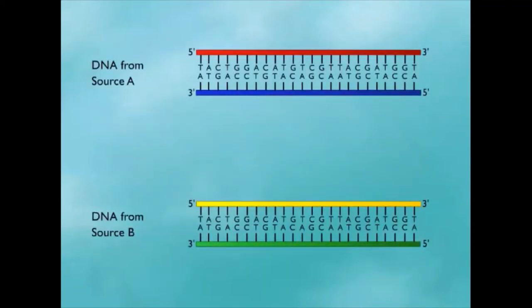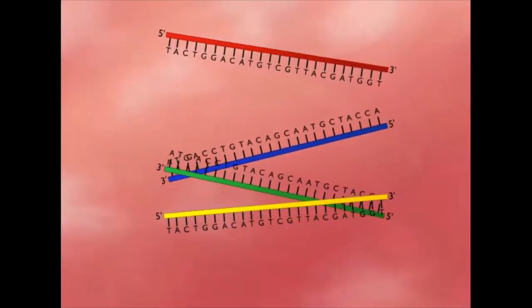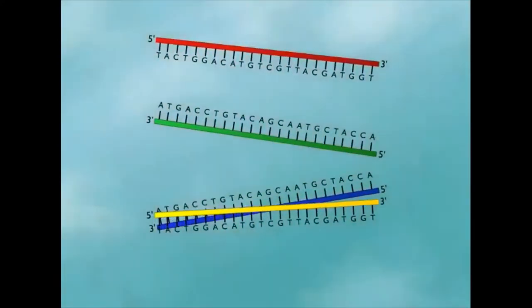If the nucleotide sequences are similar, complementary strands from different sources will also anneal. This is called hybridization to indicate that each strand of DNA came from a different source.